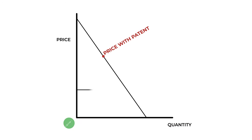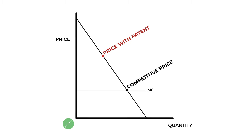But neither of these solutions is going to work well for COVID. It's too late to subsidize the basic research, and a patent is exactly the wrong idea. A patent raises the price above the competitive price, but we know the competitive price is already too high. For a good with a positive externality like a vaccination, we want the price to be below the competitive price. So a patent creates a severe misallocation of resources.